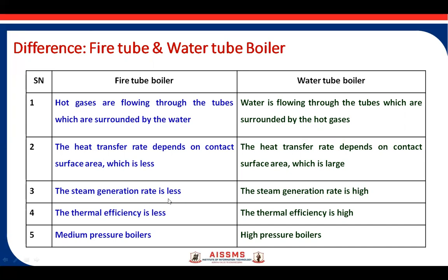Steam generation rate is less in fire tube boilers as the surface area is less, but in water tube boilers the steam generation rate is higher. In terms of efficiency, the thermal efficiency of fire tube boilers is less and that of water tube boilers is higher. Fire tube boilers are used for locomotive or marine applications as medium pressure boilers, while for power generation in thermal power plants, high pressure water tube boilers are used.